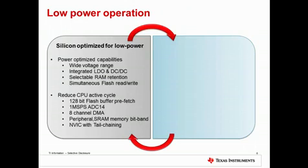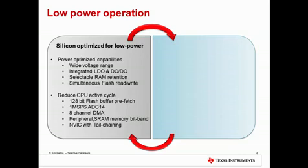When it comes to low power operation, first we wanted to optimize the silicon for low power. We included capabilities like a wide voltage range — MSP432 can run at 1.62 volts, including at full speed as well as flash access. We've also integrated a DC to DC converter that allows you to be more efficient while operating at speeds over 24 MHz.